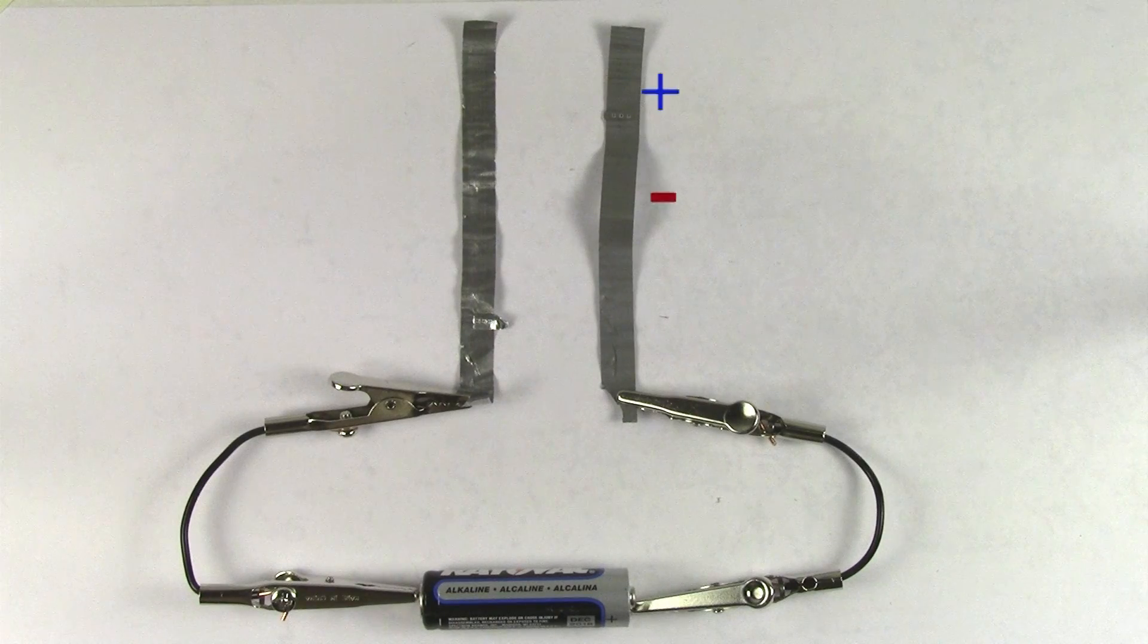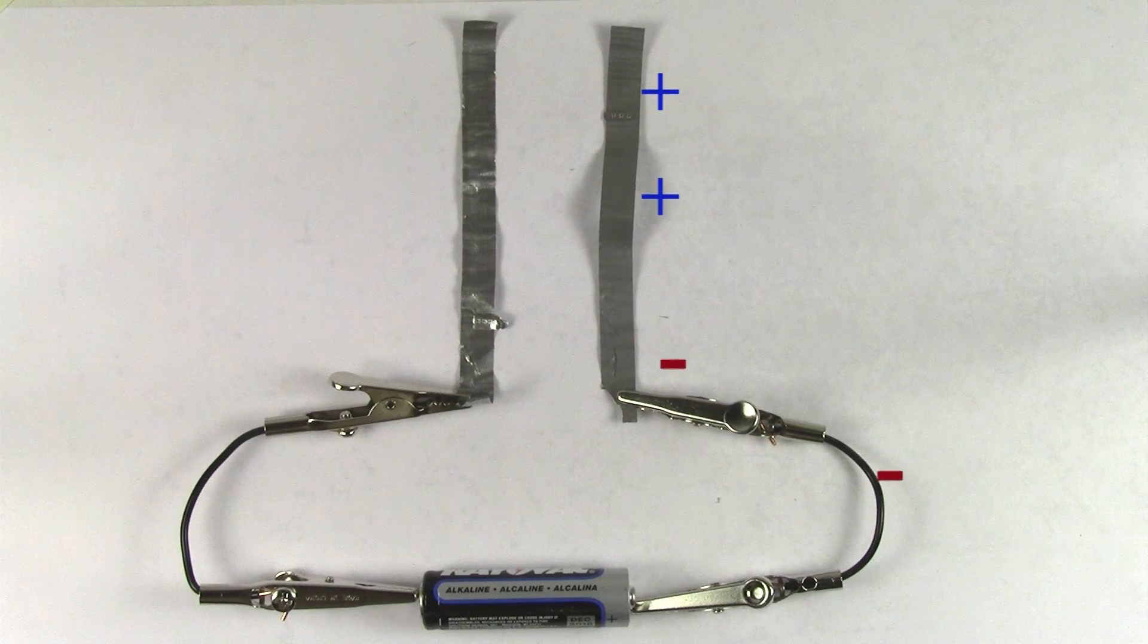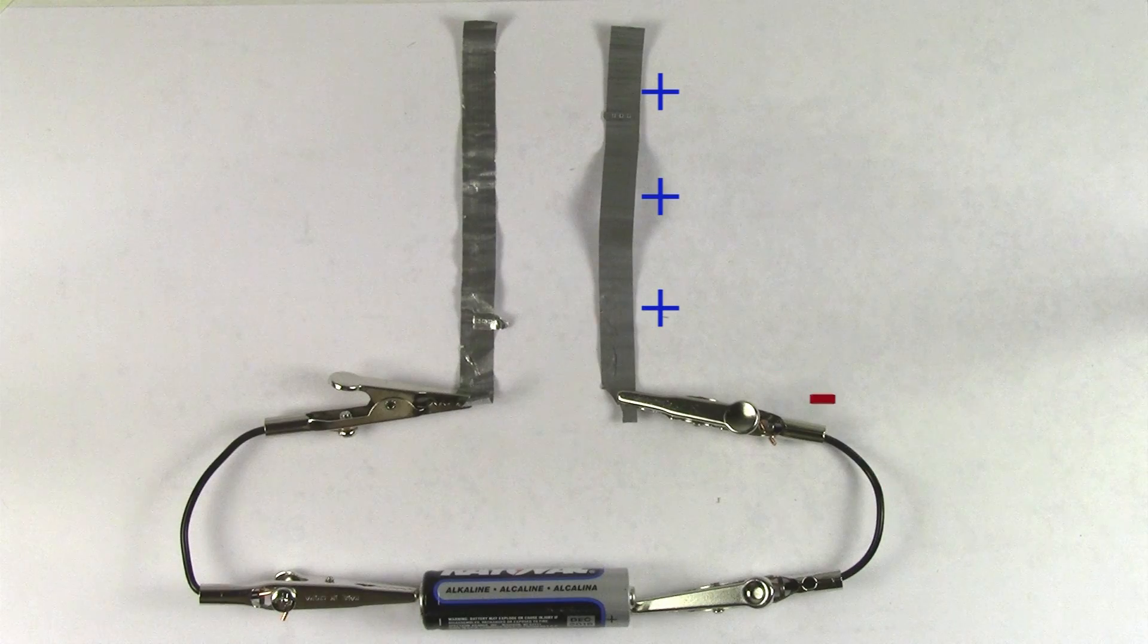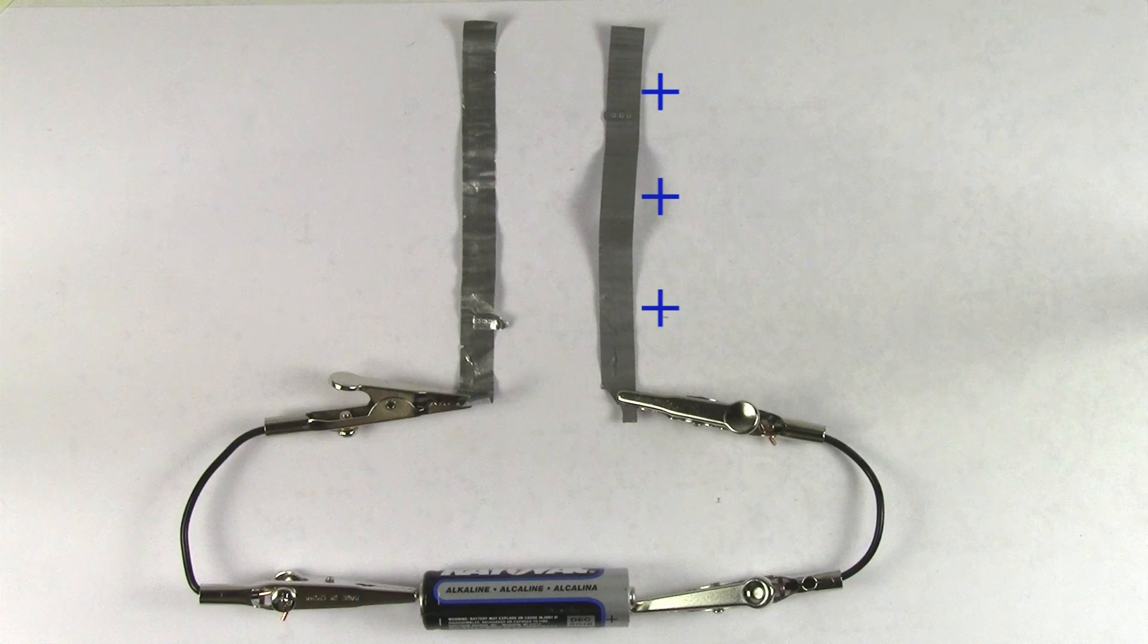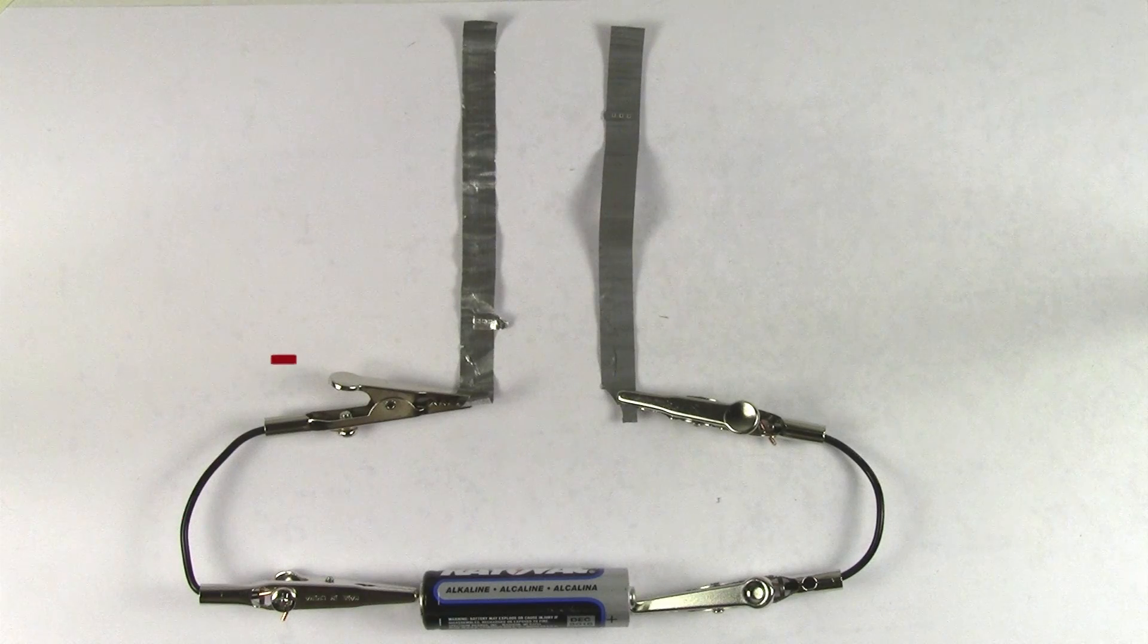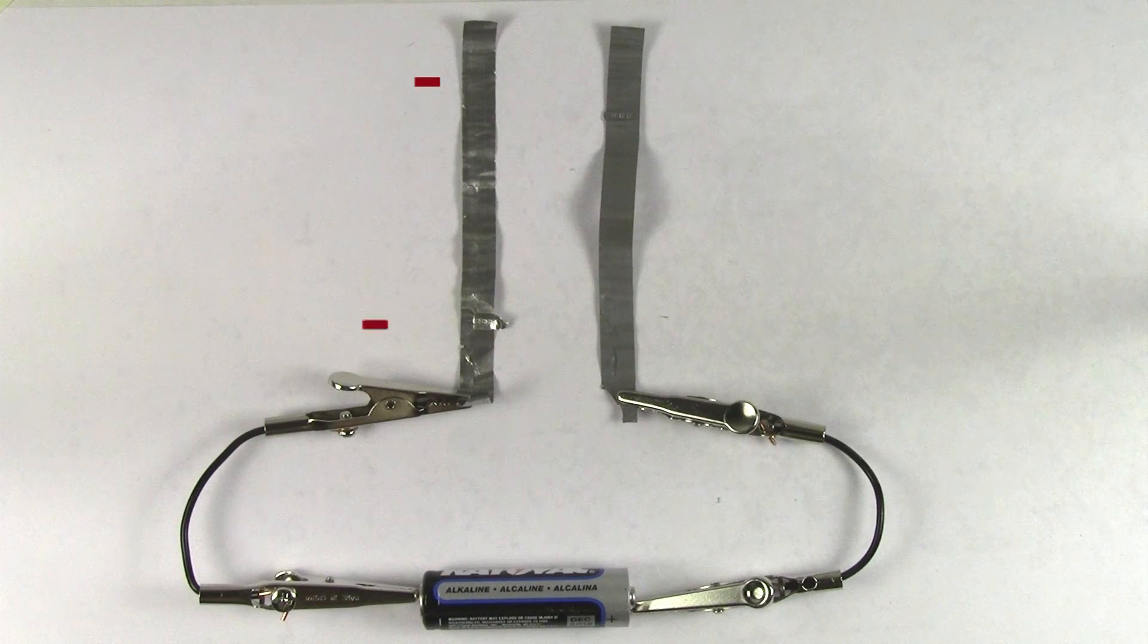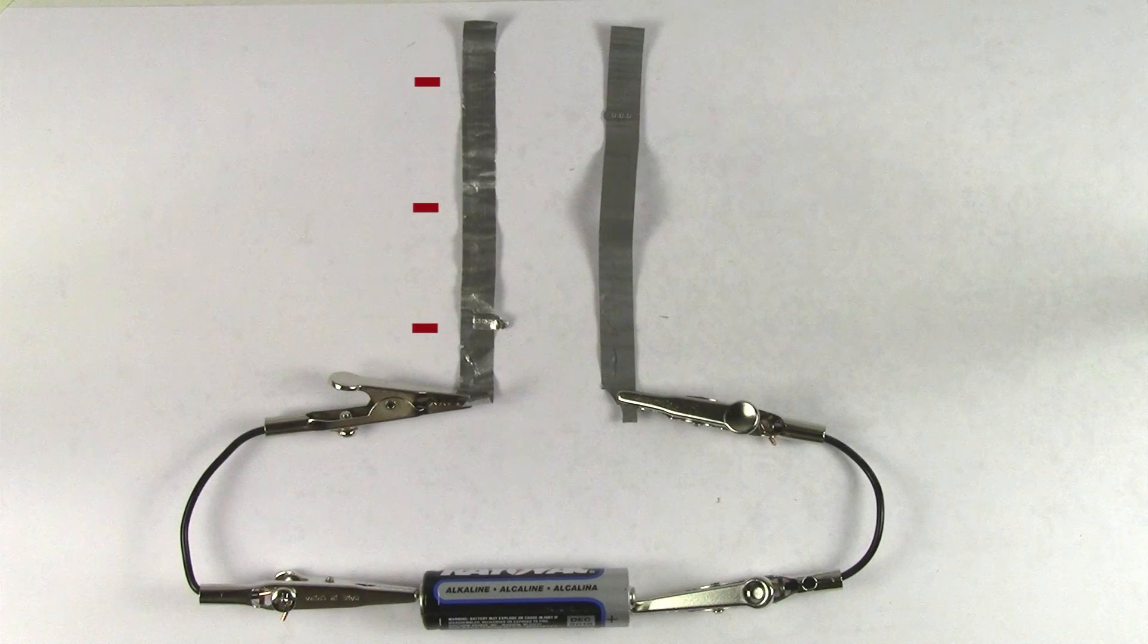As negative charges leave the piece of metal on the right, it causes that piece of metal to become positively charged, because now that piece of metal has less negatives than it does positives. And the piece of metal on the left becomes negatively charged because now it has more negatives than it does positives.